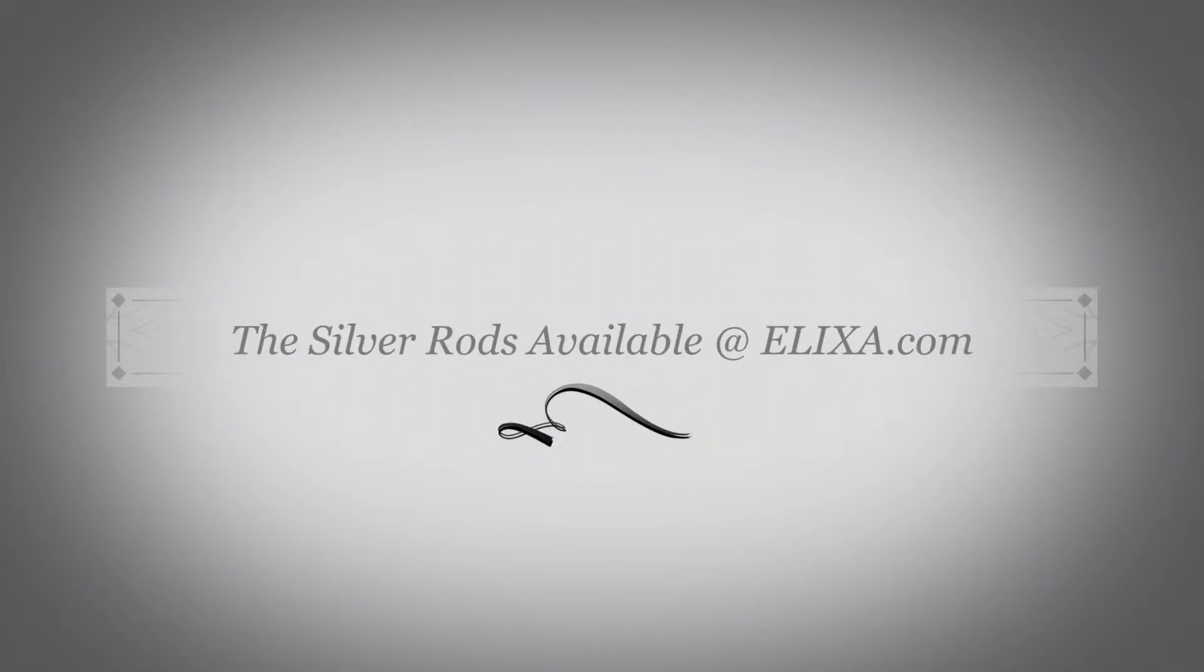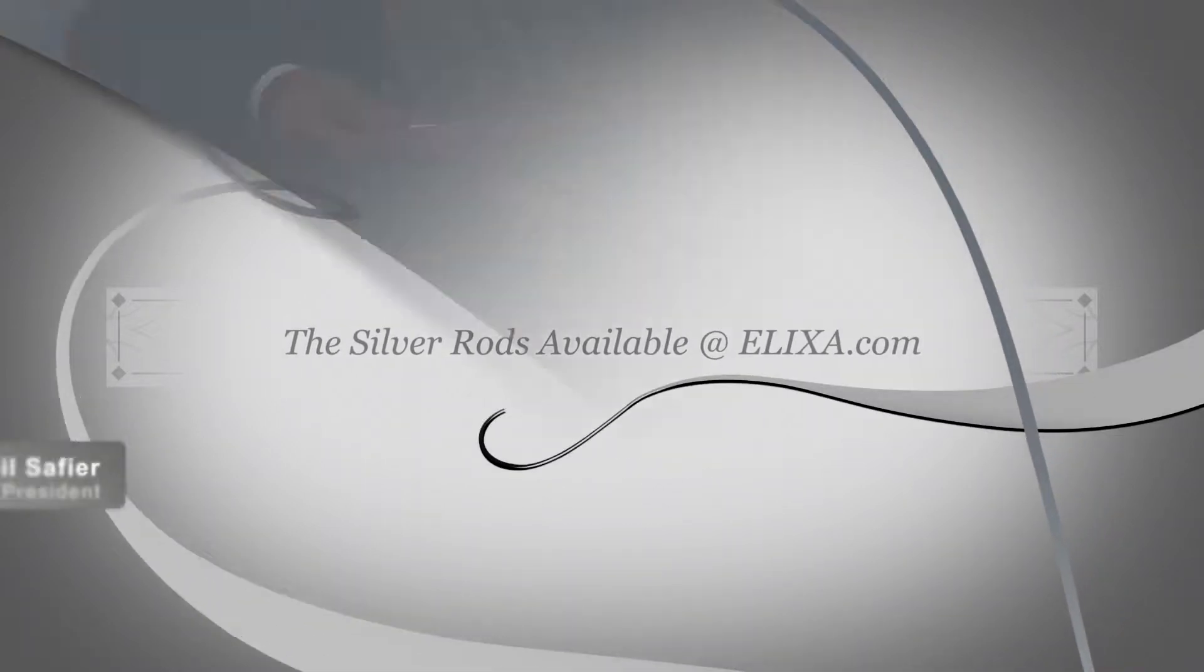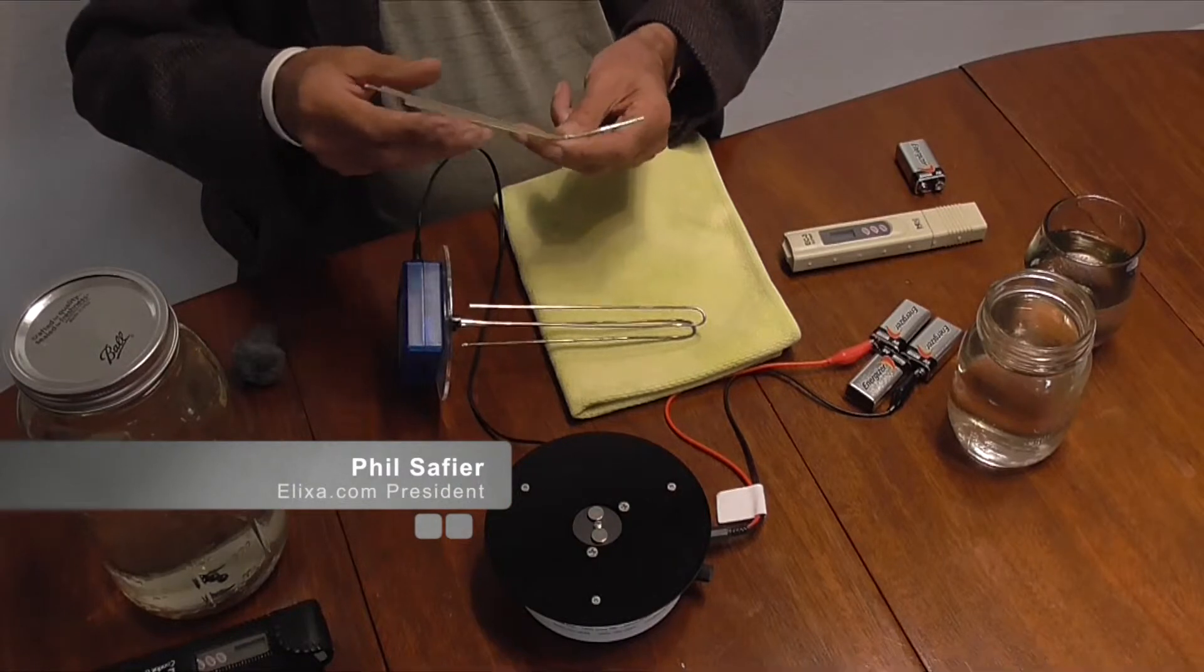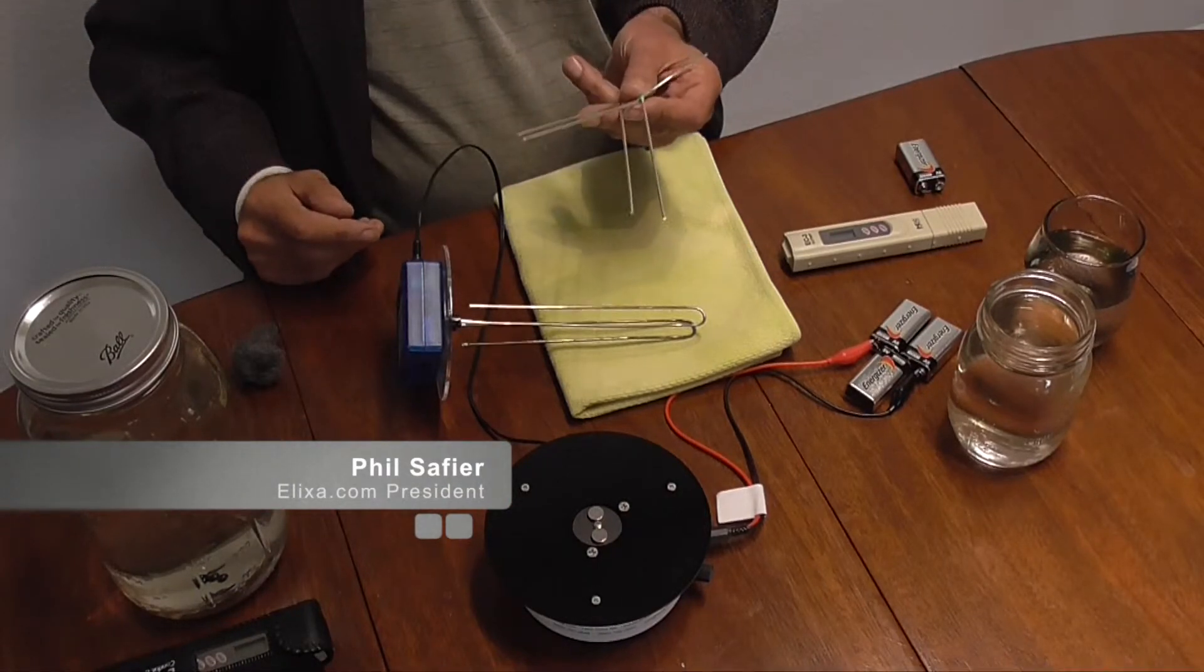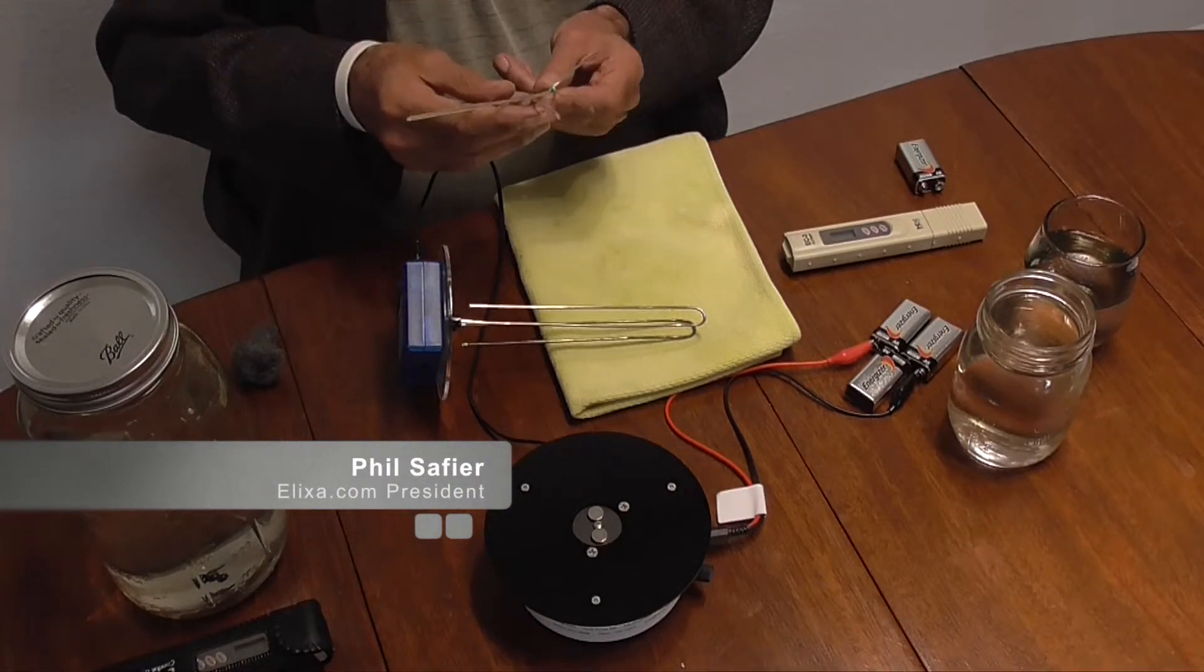Okay, when you first get the rods—the silver, again this is 99.99% pure silver—it's going to look nice and shiny and silvery.